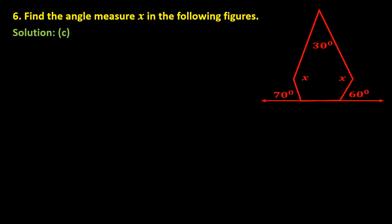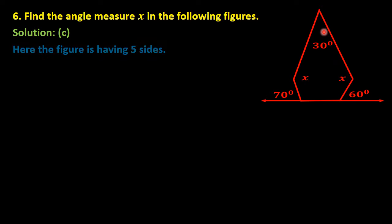Now let me do question number 6c. In this figure, three angles are interior angles and two angles are exterior angles. An interior angle lies within the polygon, while an exterior angle lies outside. This polygon has five sides, so we call it a pentagon.